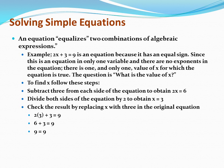An equation equalizes two combinations of algebraic expressions. Example: 2x + 3 = 9 is an equation because it has an equal sign. Since this is an equation in only one variable and there are no exponents, there is one and only one value of x for which the equation is true. The question is, what is the value of x? To find x, you can follow these simple steps: Subtract 3 from each side to obtain 2x = 6. Divide both sides by 2 to obtain x = 3. Check the result by replacing x with 3 in the original equation: 2 times 3 plus 3 equals 9. 6 + 3 = 9. 9 = 9.